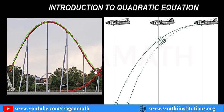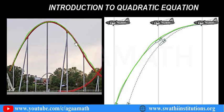You can see and observe the shape, how it is. Similarly, in defense also they apply the quadratic equation, like when they would like to target a place. See the shape of this. If you observe these curved lines here in the roller coaster or in the defense, the army people use it.